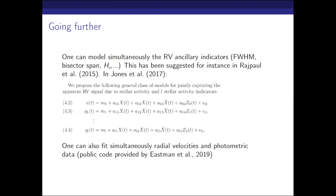Going further from that framework, something you can do is model the RV data along with other spectroscopic indicators, like the FWHM or bisector span. You can have a framework in which a Gaussian process and its derivatives simultaneously model the primary time series of interest and other time series — look at Jones et al. 2017, for example. You can also fit radial velocities and photometric data together — see the very nice paper by Jason Eastman.